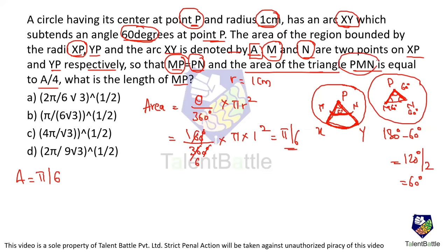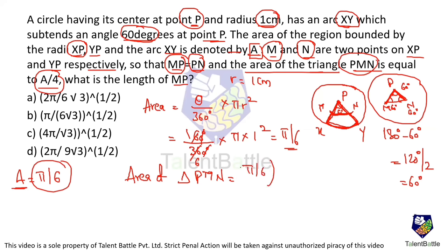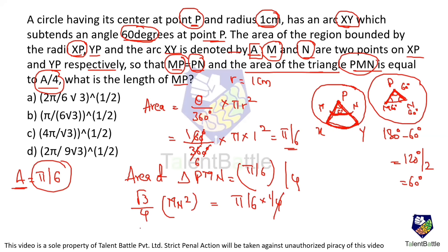The area of equilateral triangle PMN = A/4 = (π/6)/4 = π/24. Using the equilateral triangle area formula: (√3/4)·s² = π/24, where s = MN = MP. Solving: s² = π/(6√3), so MN² = π/(6√3).